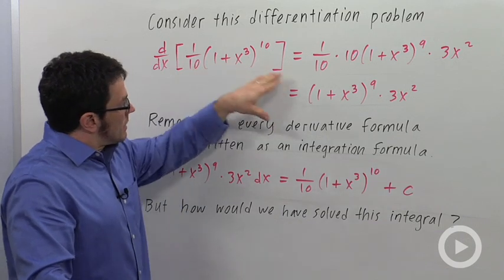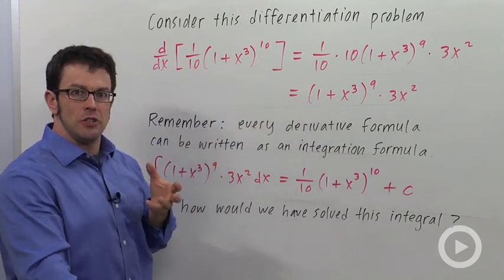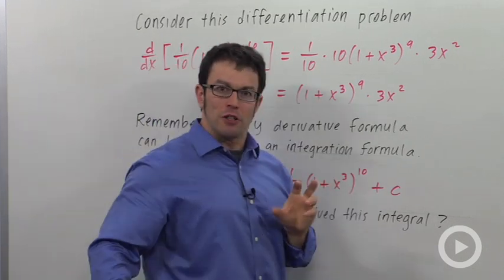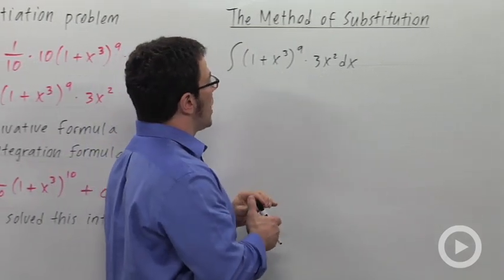We use the chain rule to get this derivative. The method of substitution kind of reverses the process of the chain rule. It undoes the chain rule. So this is like a reverse chain rule. Let me show you how it works.